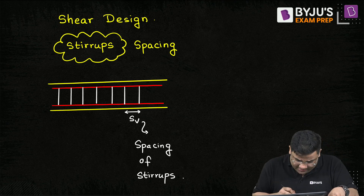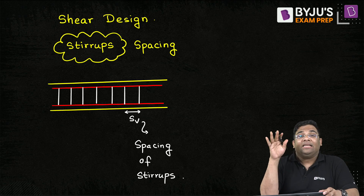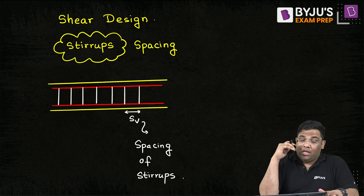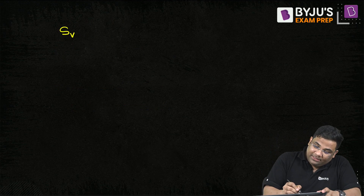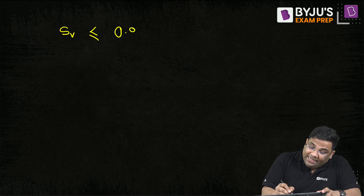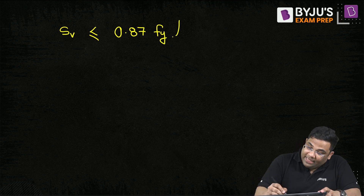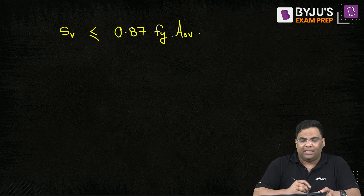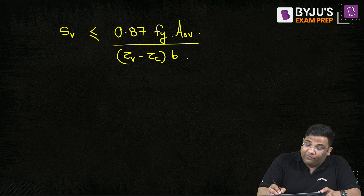The V stands for vertical stirrups because the stirrups are placed vertically. Now, the formula for spacing is: Sv ≤ 0.87·Fy·Asv divided by (τv minus τc) into b. This is the formula to find out the spacing of stirrups.